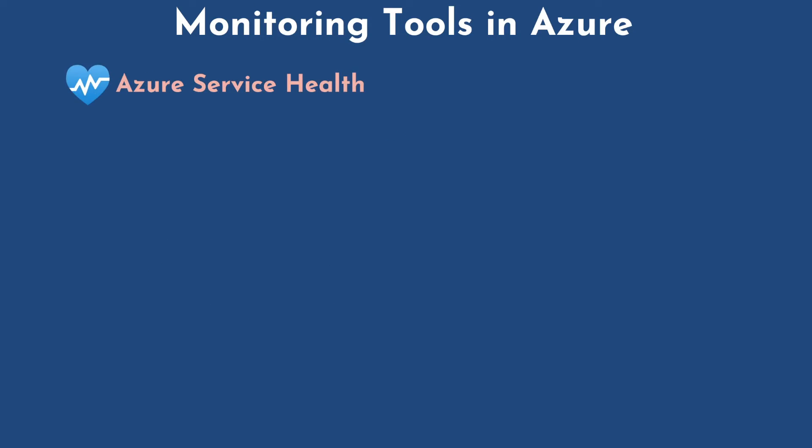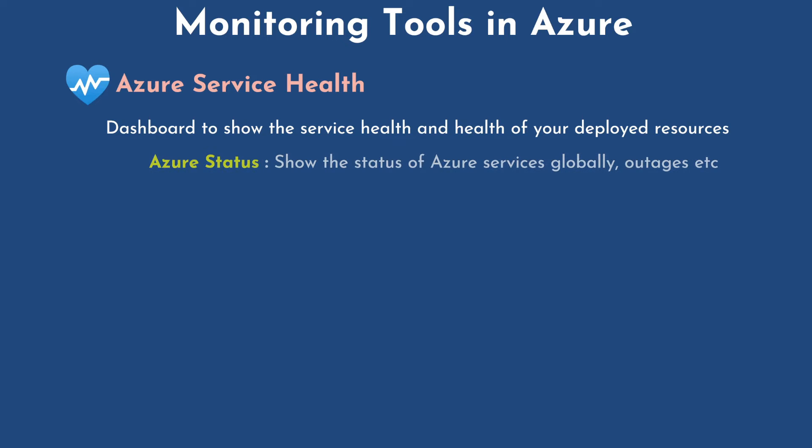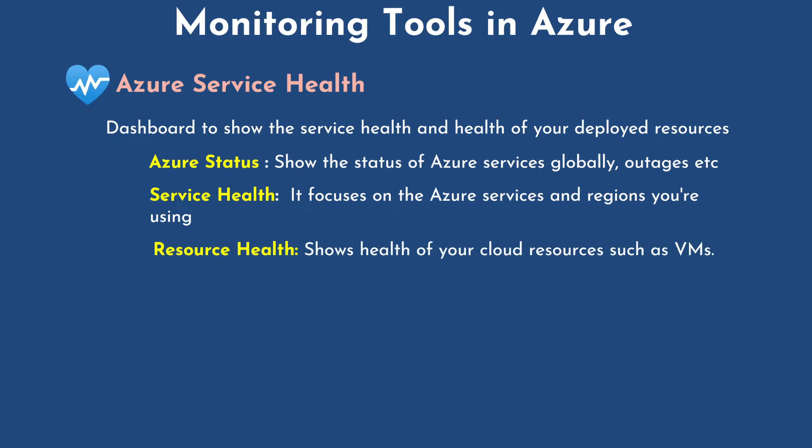The next one is Azure Service Health. Azure Service Health is a dashboard that shows the service health and health of your deployed resources — overall health of the Azure resources as hosted in the Microsoft data center. It comprises three components. The first one is Azure Status, which shows the status of Azure services globally and whether there is any outage or the service is healthy. The next one is Service Health, which focuses on the Azure services and regions that you are using, not the global resources. Then we have Resource Health, which shows the health of your cloud resources such as virtual machines deployed on Azure and whether they are impacted by any outage or are healthy.